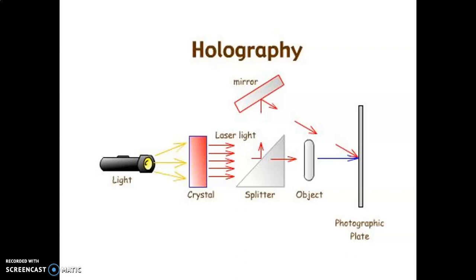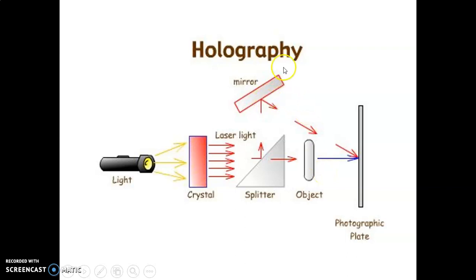Another component of the holographic system is the beam splitter. A beam splitter is a device that uses mirrors and prisms to split the laser beam into two beams. One beam through the beam splitter is directed towards the object — the entity of which we are expecting the hologram — and another beam is directed towards the mirror. So the beam splitter produces two beams: one object beam directed towards the object, and one reference beam directed towards the mirror.